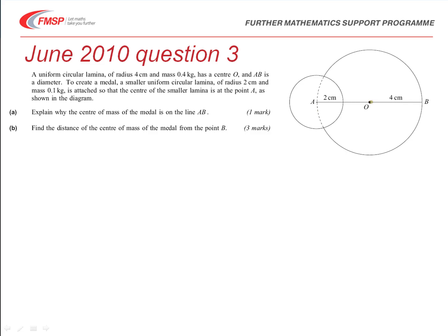So the key thing you need to say there is, one, the lamina are uniform, so therefore their centres of mass lie at the centres of the circle, and therefore by symmetry, and that's the key word to use, symmetry, the centre of mass must lie between A and O, on that line AB.